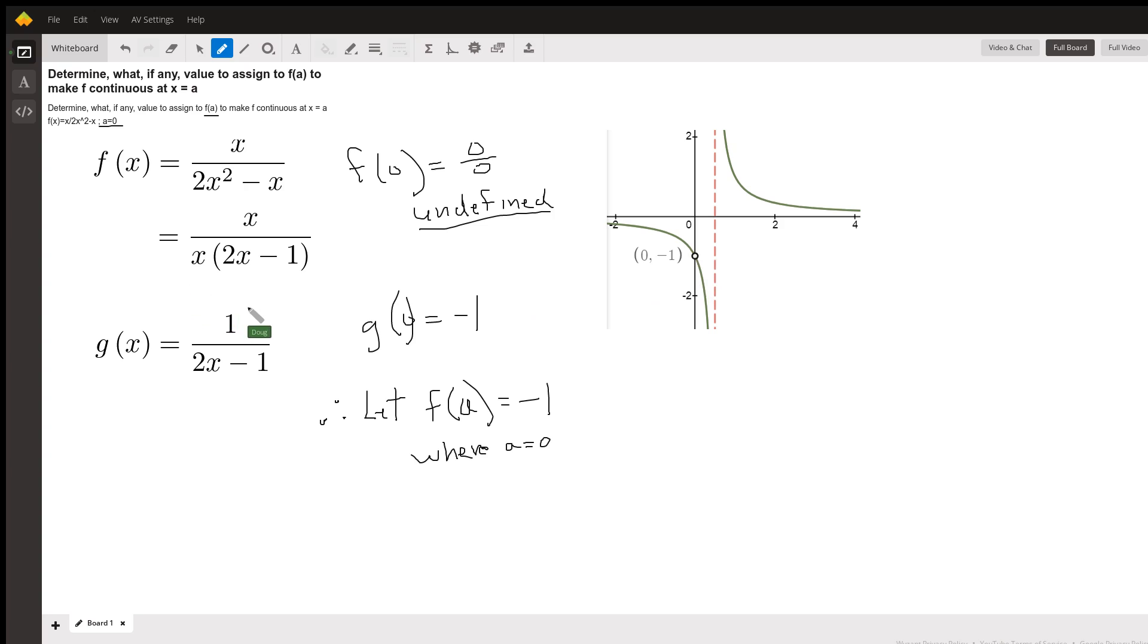To find out how to fill in the hole, we picture canceling out these x's and get this residual function, g(x) = 1/(2x - 1). When we put 0 in for x here, we get 1 over -1, which is -1.